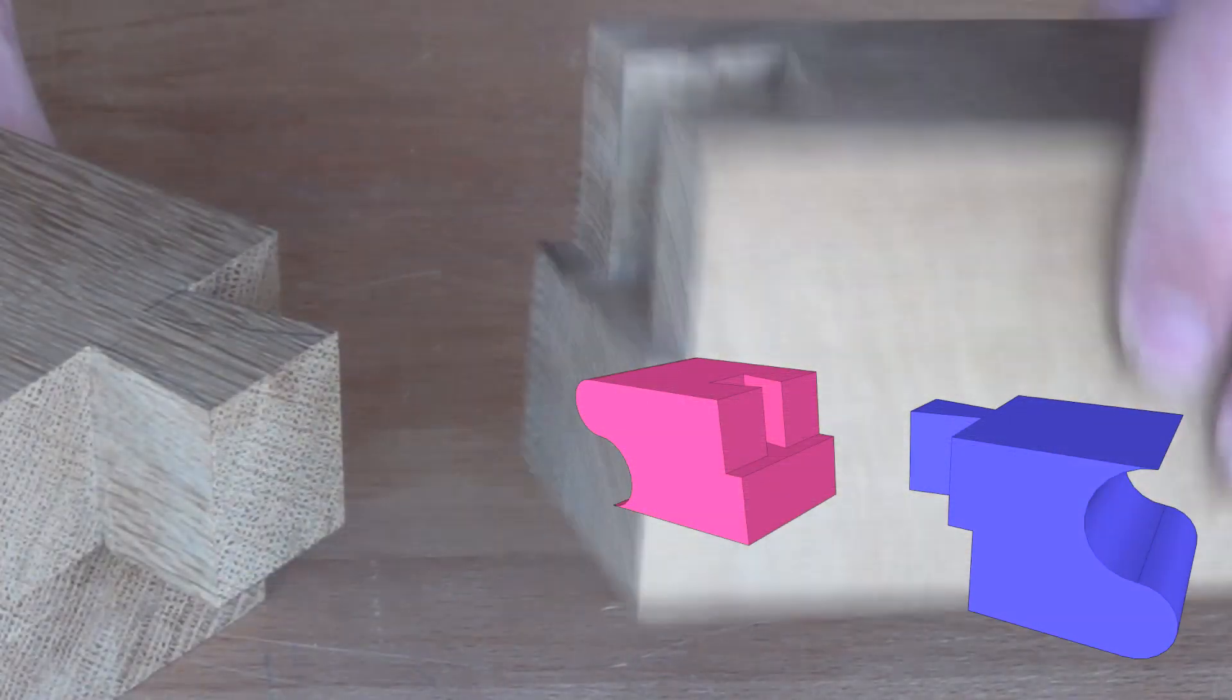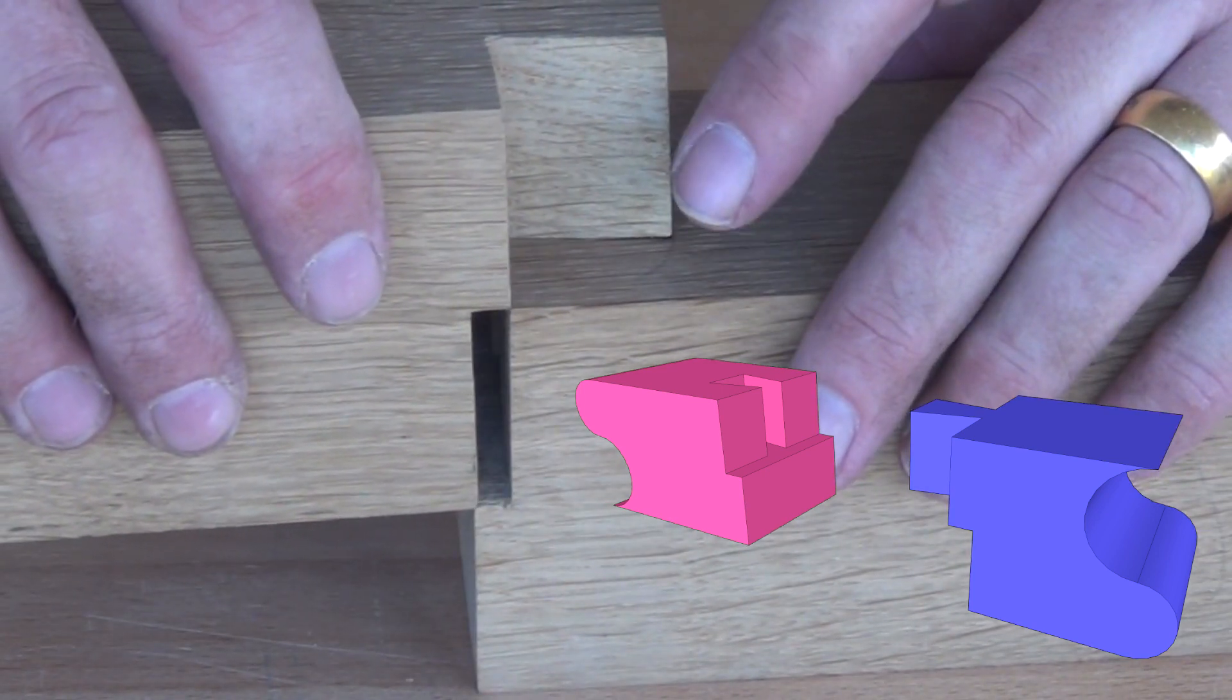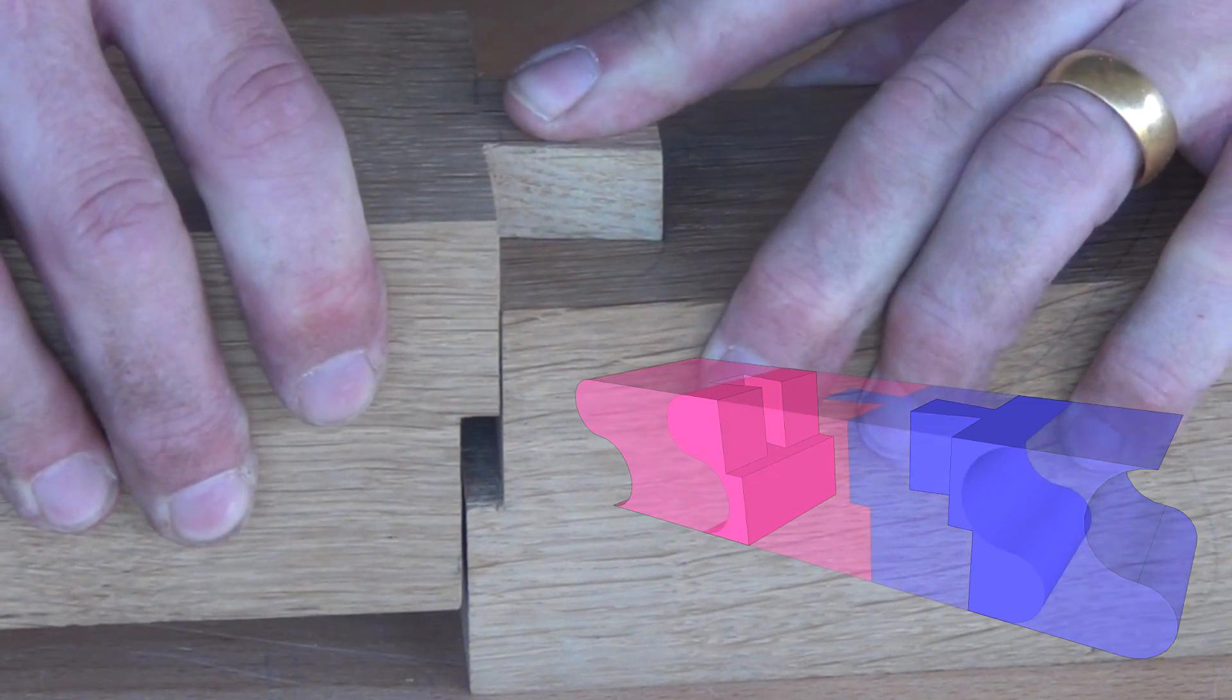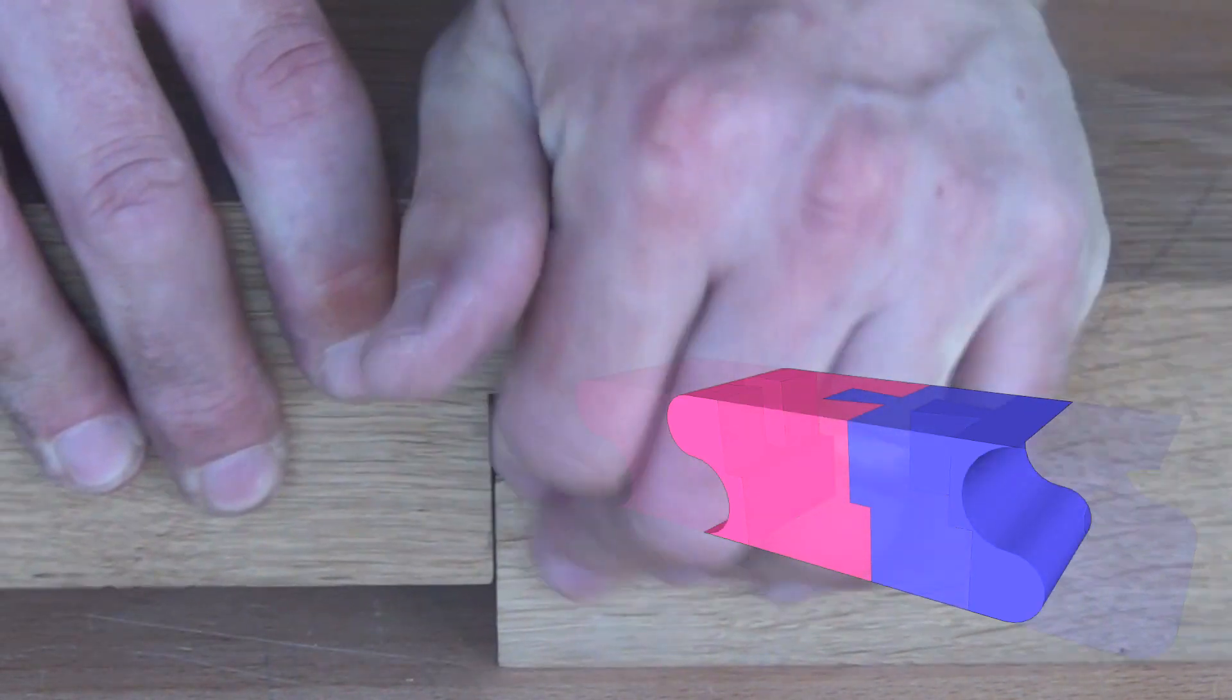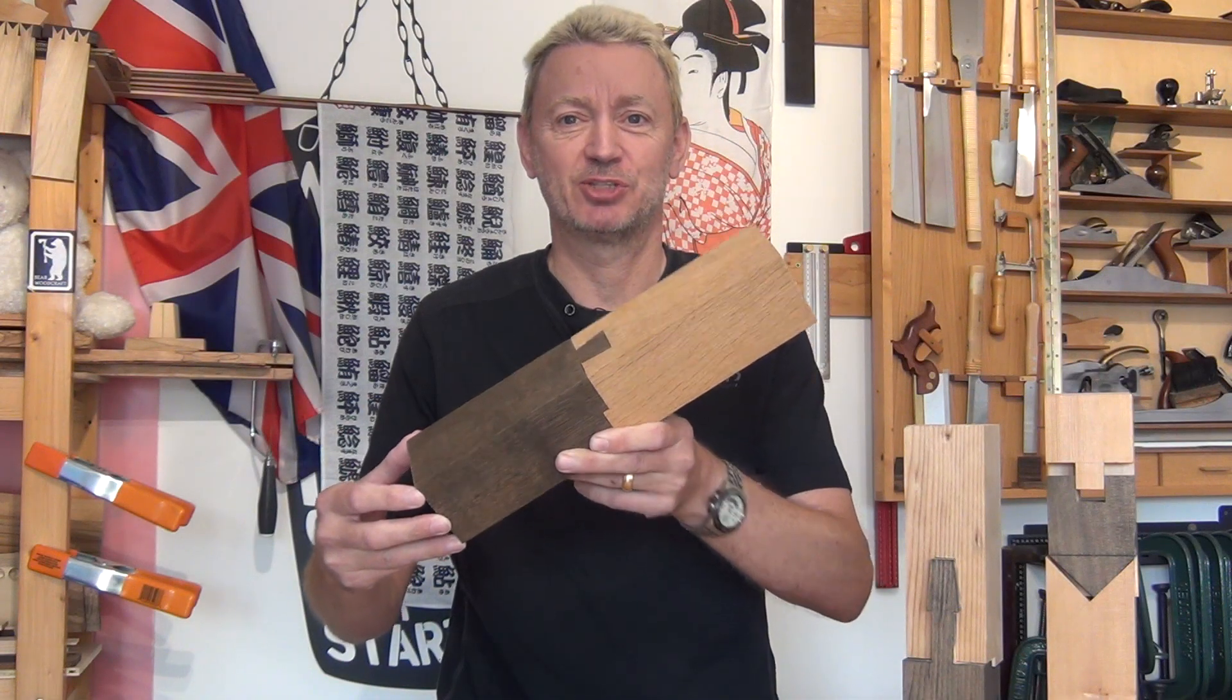Now with the dovetail socket cleaned out, we can put them together and here's the finished joint.